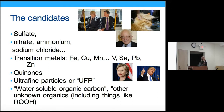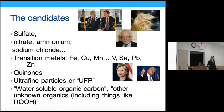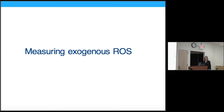More potent candidates include transition metals — particularly iron, copper, and manganese — which are present at reasonably high concentrations and can redox cycle, making them likely to be involved in ROS formation. Quinones also have some evidence in the literature. Ultrafine particles, water-soluble organic carbon, and other unknown organics like ROOH are candidates with a growing pile of evidence. These are probably the ones we need to take most seriously.